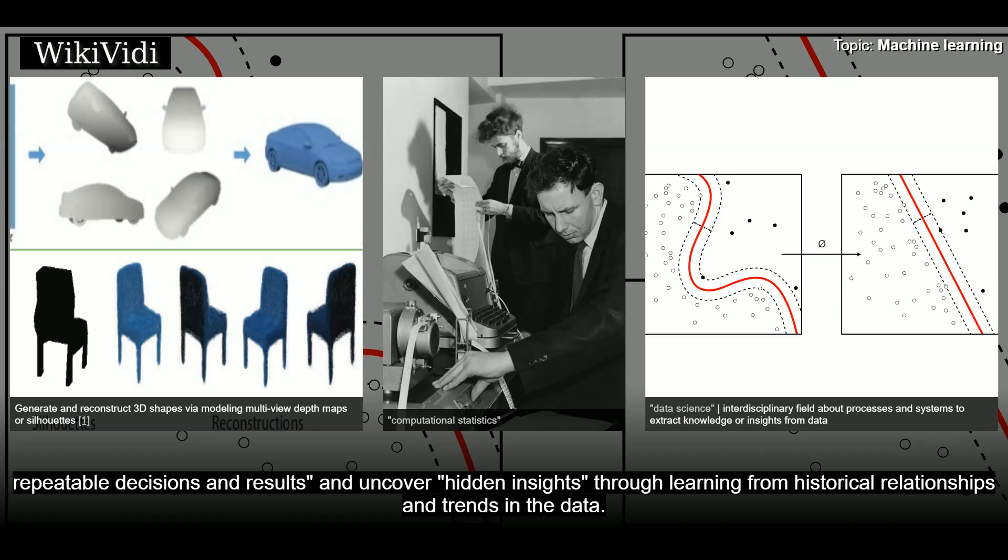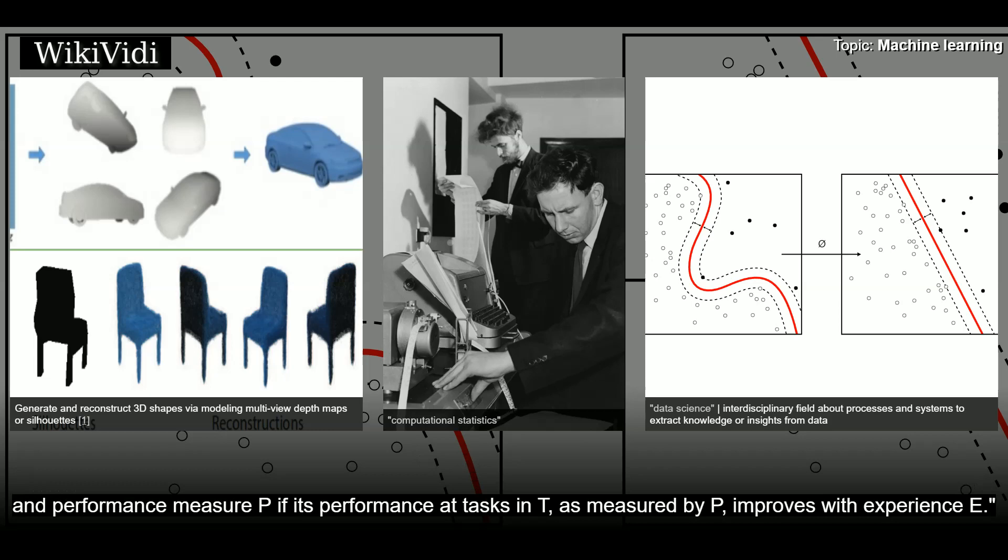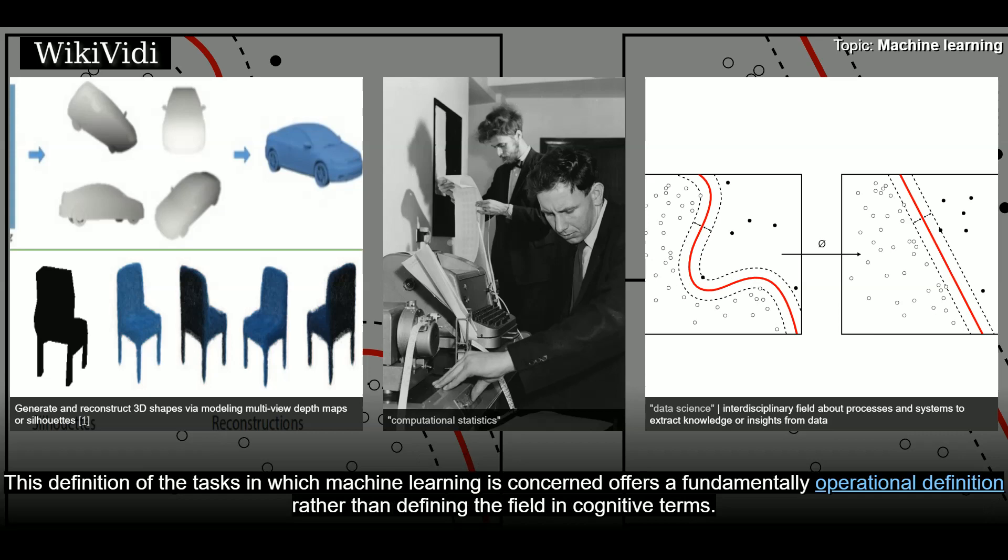Overview. Tom M. Mitchell provided a widely quoted, more formal definition of the algorithms studied in the machine learning field. A computer program is said to learn from experience E with respect to some class of tasks T, and performance measure P if its performance at tasks in T, as measured by P, improves with experience E. This definition of the tasks in which machine learning is concerned offers a fundamentally operational definition rather than defining the field in cognitive terms. This follows Alan Turing's proposal in his paper, Computing Machinery and Intelligence.